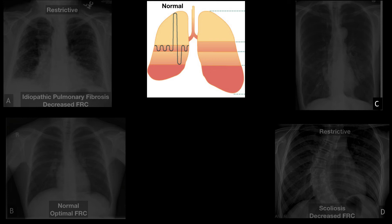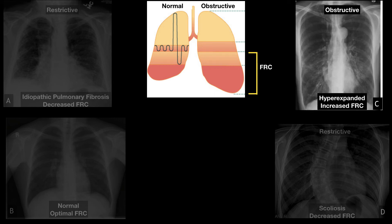Let's compare normal to an obstructed X-ray, where the FRC is larger than normal. Because of this, on the VQ mismatch continuum, they're closer to dead space. Here's an X-ray of someone with COPD or asthma — they have hyper-expanded lungs and increased FRC, and these patients primarily present with CO2 problems.